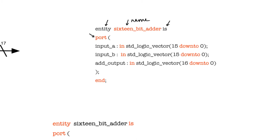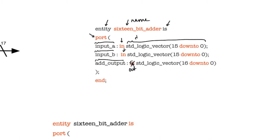The ports of the entity in this case are three. This is the name of the first port, the name of the second port, and the name of the third port. The first port is of type 'in', indicating that it's an input port. The second port is also of type 'in', and the third port should actually be of type 'out' — so this is an error here. What follows the direction of the port is the data type of the port.